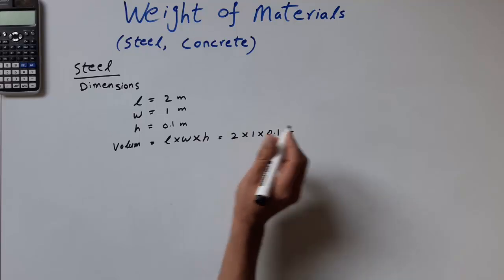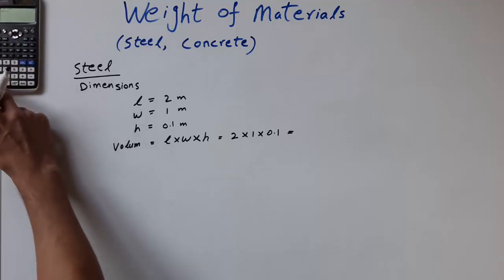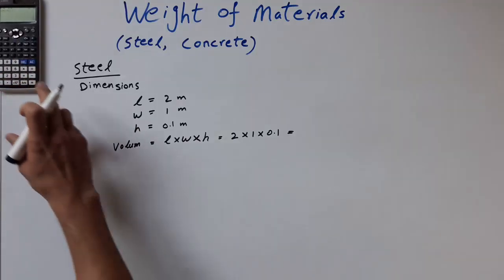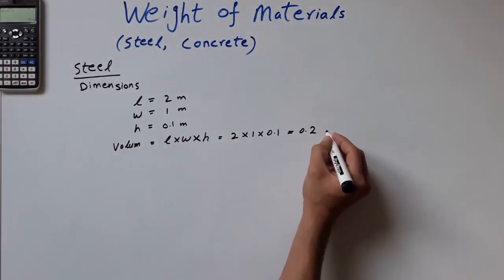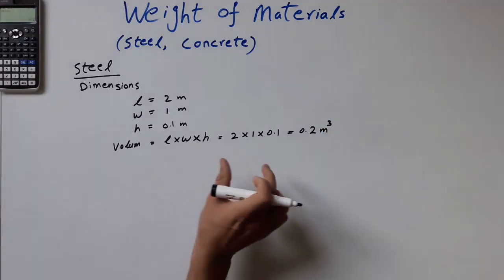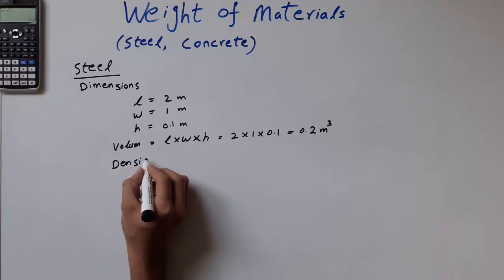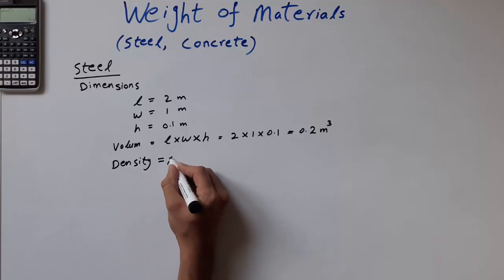So 2 times 1 times 0.1 gives us 0.2 cubic meters. So we have the volume.